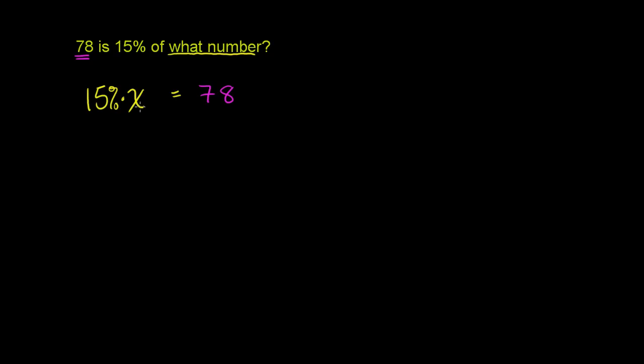And now we just literally have to solve for x. Now, 15% mathematically, you can deal directly with percentages, but it's much easier if it's written as a decimal. And we know that 15% is the same thing as 15 per 100. That's literally per cent. Cent means 100. Which is the same thing as 0.15.